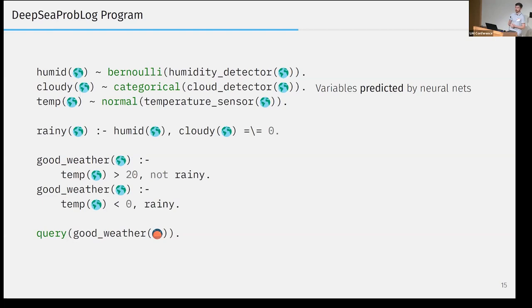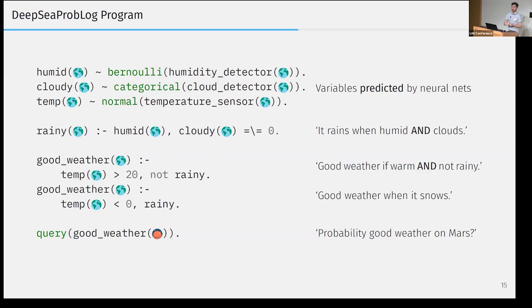With these two concepts, we can look at a complete DeepSea ProbLog extension of our running example. We start by defining our random variables as before, but these can now be both discrete and continuous. We also still support purely discrete logical rules, rainy when humid and cloudy, but we can now define what it means for the weather to be good in a more intricate way by using the continuous random variable. Namely, the weather is good when it is quite warm and it is not raining, or the weather is good when temperature is below zero and it is raining or it is snowing, in other words. We can also see how the logical reasoning gives us immediate generalization capabilities, as we can simply swap out the input to the neural networks by something else and use the exact same background knowledge to answer queries such as what is now the probability that this kind of good weather is true on, let's say, Mars.